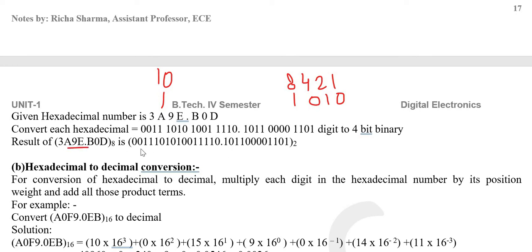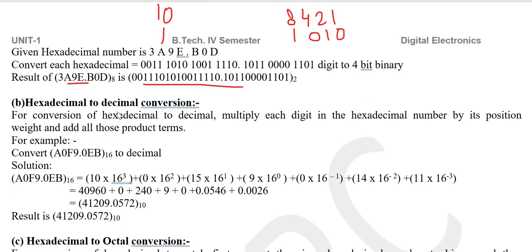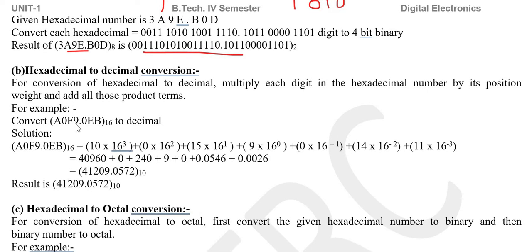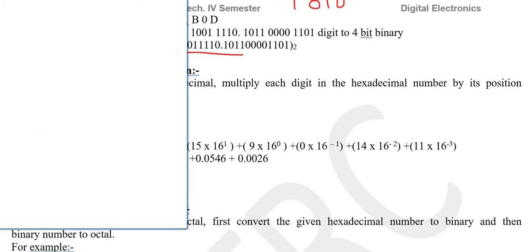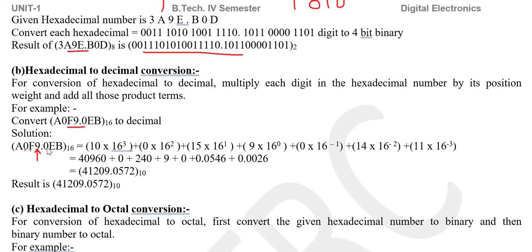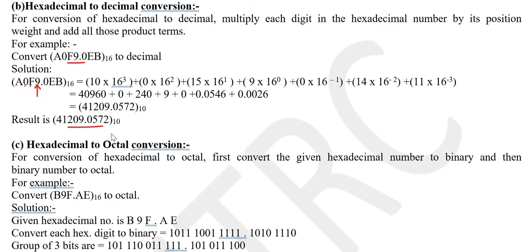So 3A9E point B0D can be fully represented in binary this way. Next is hexadecimal to decimal conversion. If we are given the number A0F9.0EB, we represent it in decimal by multiplying each digit by its corresponding power of 16 — power 0, 1, 2, and 3 for the integer part, and negative powers for the fractional part 0EB.